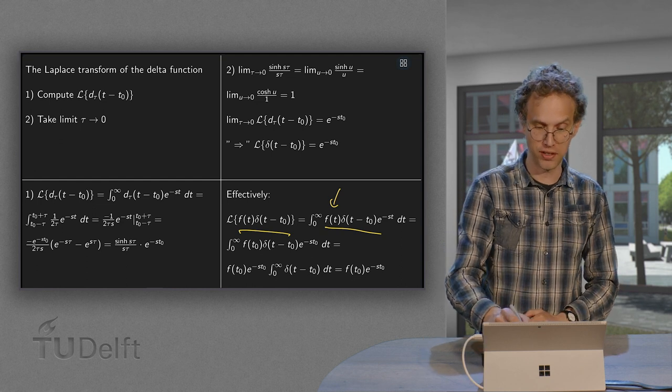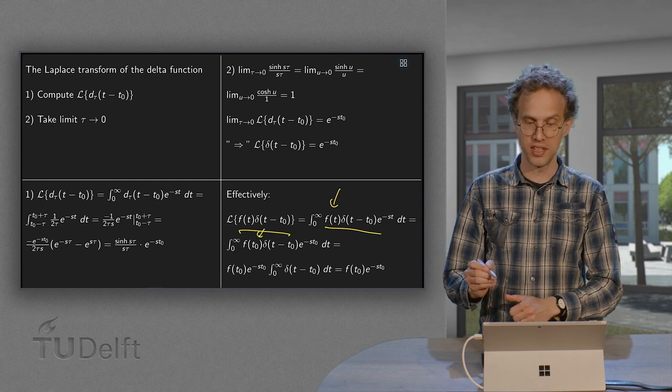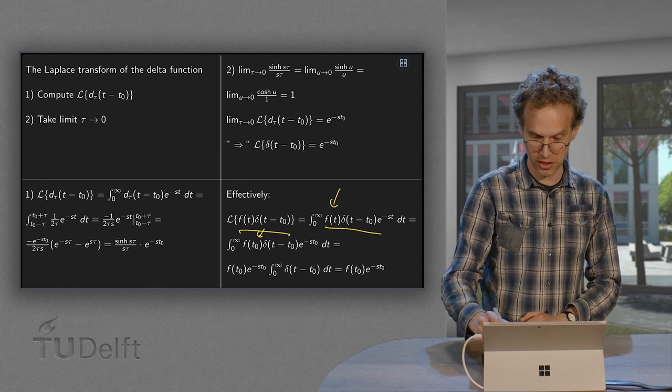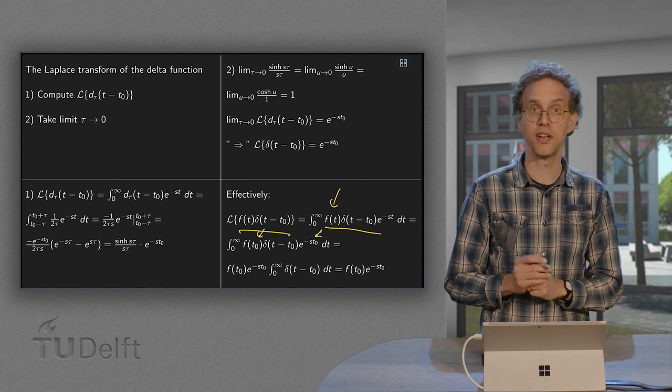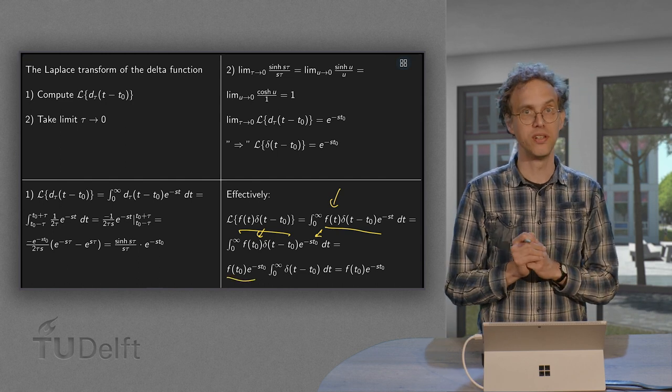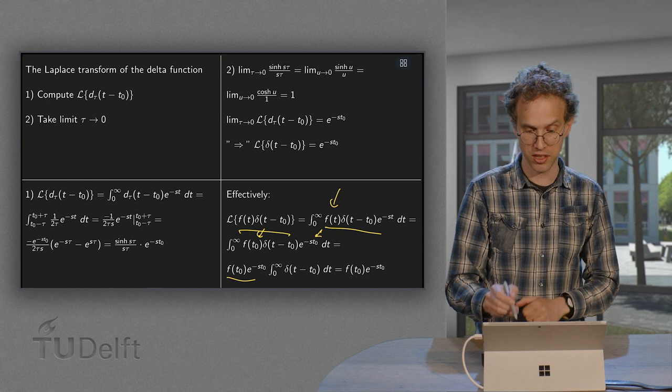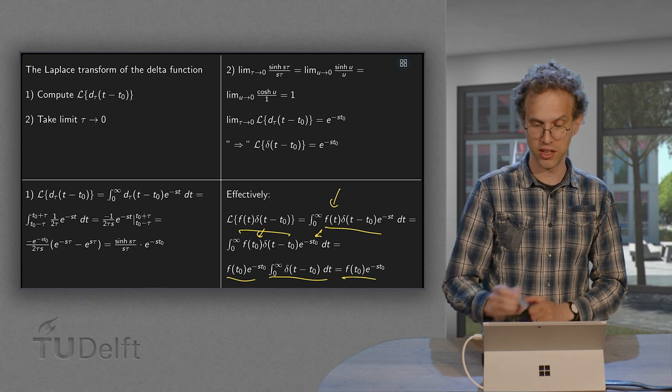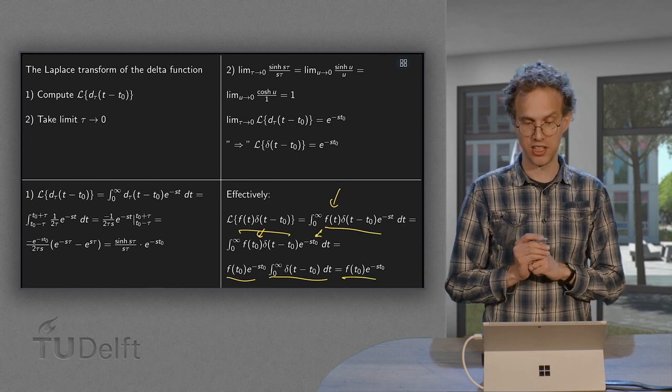So you can replace the f(t) by f(t₀). But then you can take it in front. You do the same trick over here. You can replace t by t₀ over there as well. Take everything now in front of the integral. Now you can do it because it's constant. This integral is by definition 1. So you get f(t₀) times e to the power minus st₀.